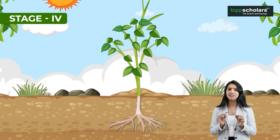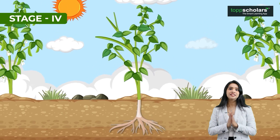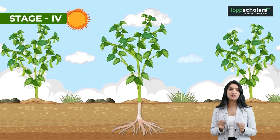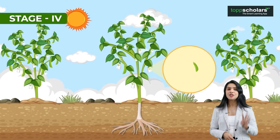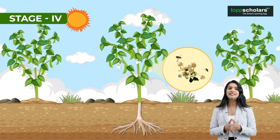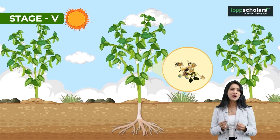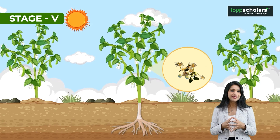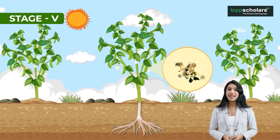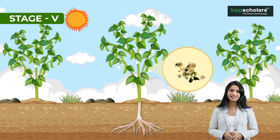The bean plant continues to grow and enters the next stage in its life cycle. The plant becomes mature and starts producing flowers in the fourth stage. The flowers on the bean plant contain both male and female parts, which work together to produce seeds. Hence, we can say flowers are crucial for making seeds.